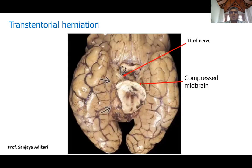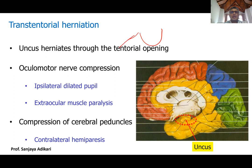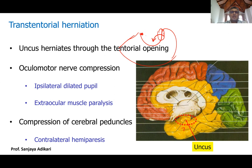In transtentorial herniation, the part that herniates through the opening of the tentorium cerebelli is the parahippocampal gyrus and the uncus of the temporal lobe — which lies at the edge of the tentorial opening. The oculomotor nerve (third cranial nerve) is very close to that area, coming out from the midbrain, which passes through the tentorial opening.